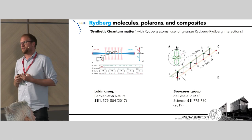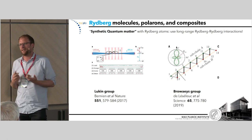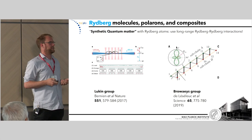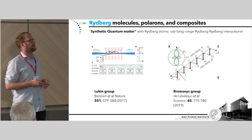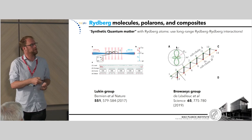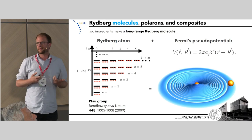If I say I want to use Rydberg atoms to study quantum materials, the typical idea people have nowadays is to take a bunch of Rydberg atoms, put them in optical tweezers, use their long-range interactions or the Rydberg blockade to study interesting physics — as has been pioneered by the Lukin group, the Browaeys group, and nowadays many others. But I want to explore a different direction: using ground state atoms within the orbit of the Rydberg atom to do similar types of things.